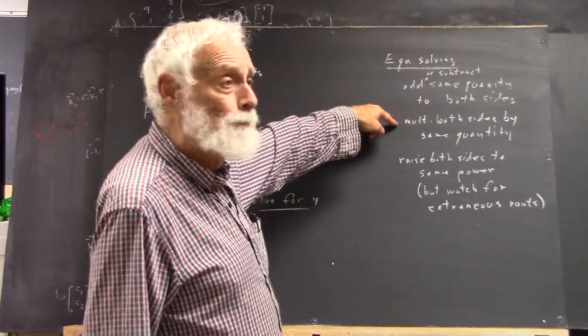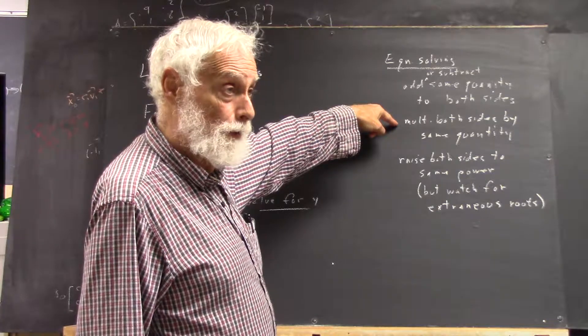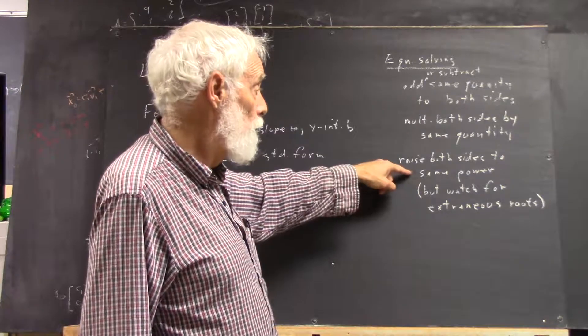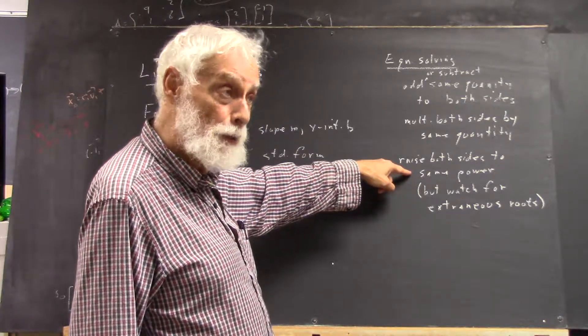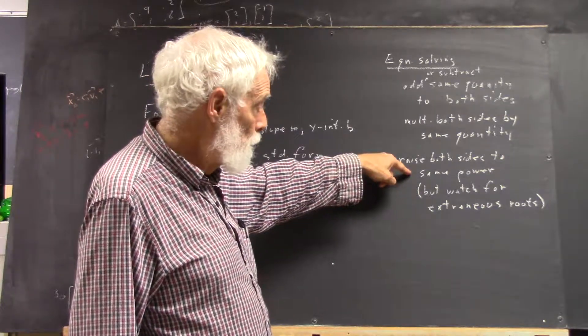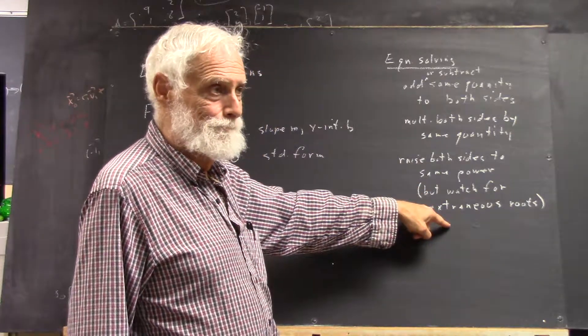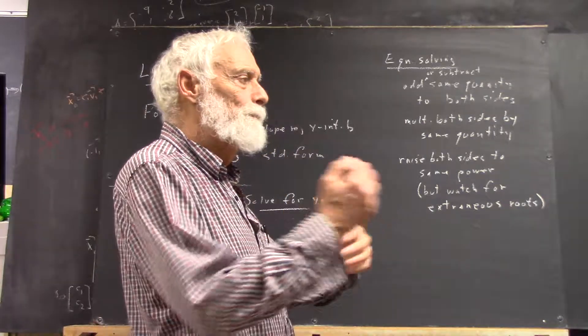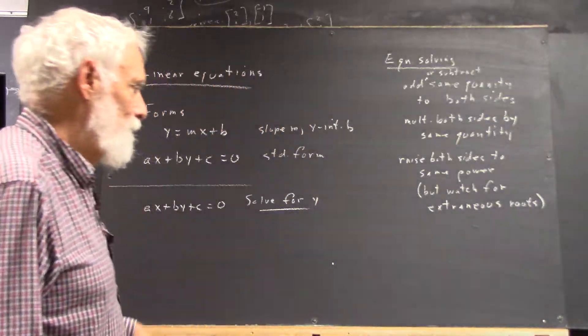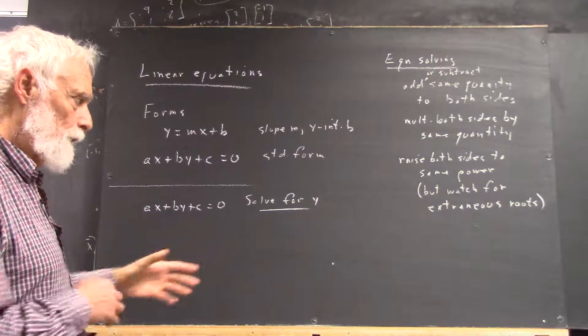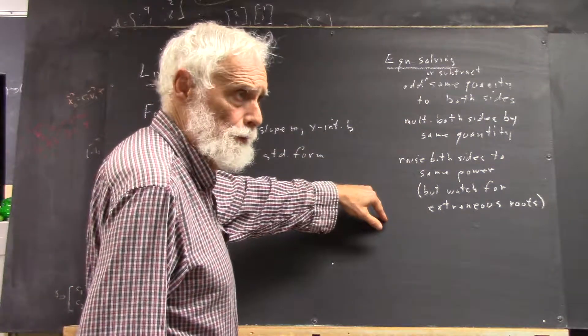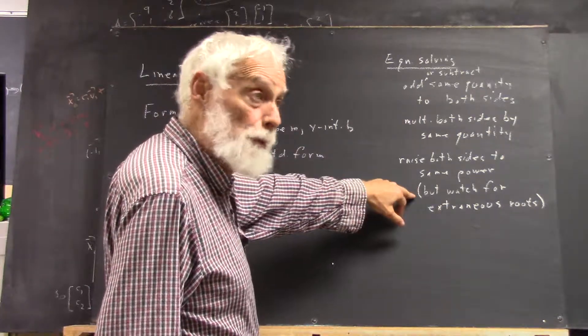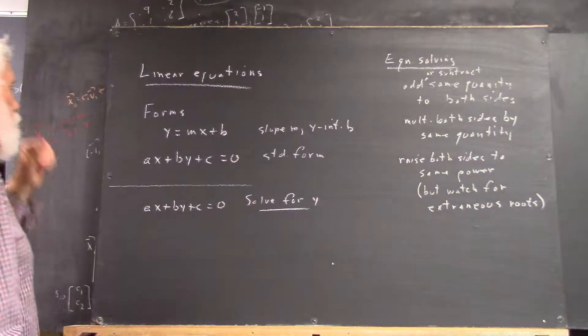Or multiply both sides of the equation by the same quantity. Or you can raise both sides to the same power. If you do that, you've got to watch out for extraneous roots. If you square both sides, then you're likely to get a plus this or minus that in your solution. And one of those might not have been a solution to the original equation. But we'll talk about that when we get to it. But you can raise both sides to the same power, but you've got to be careful. That's what you've got to kind of remember right now.